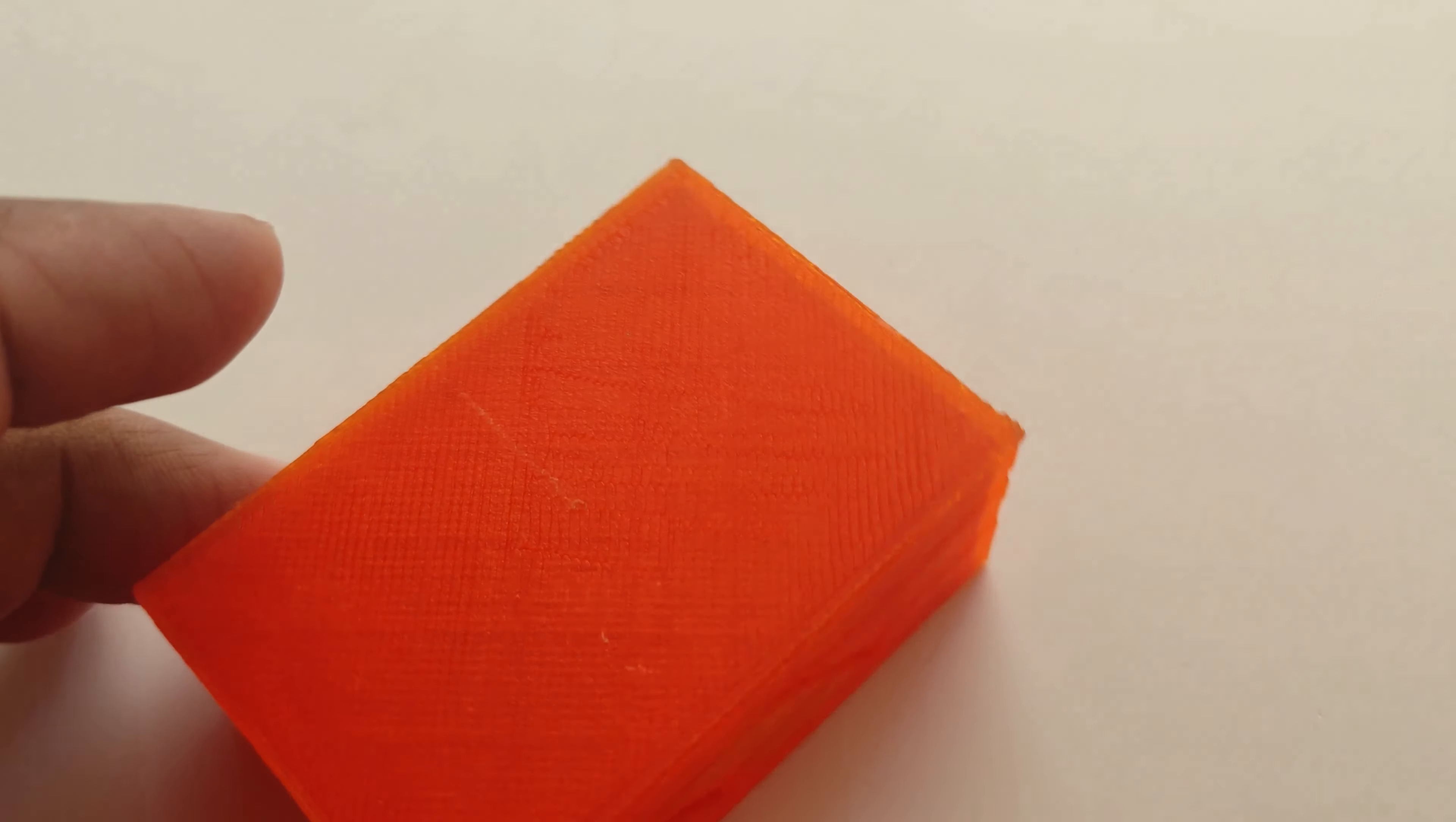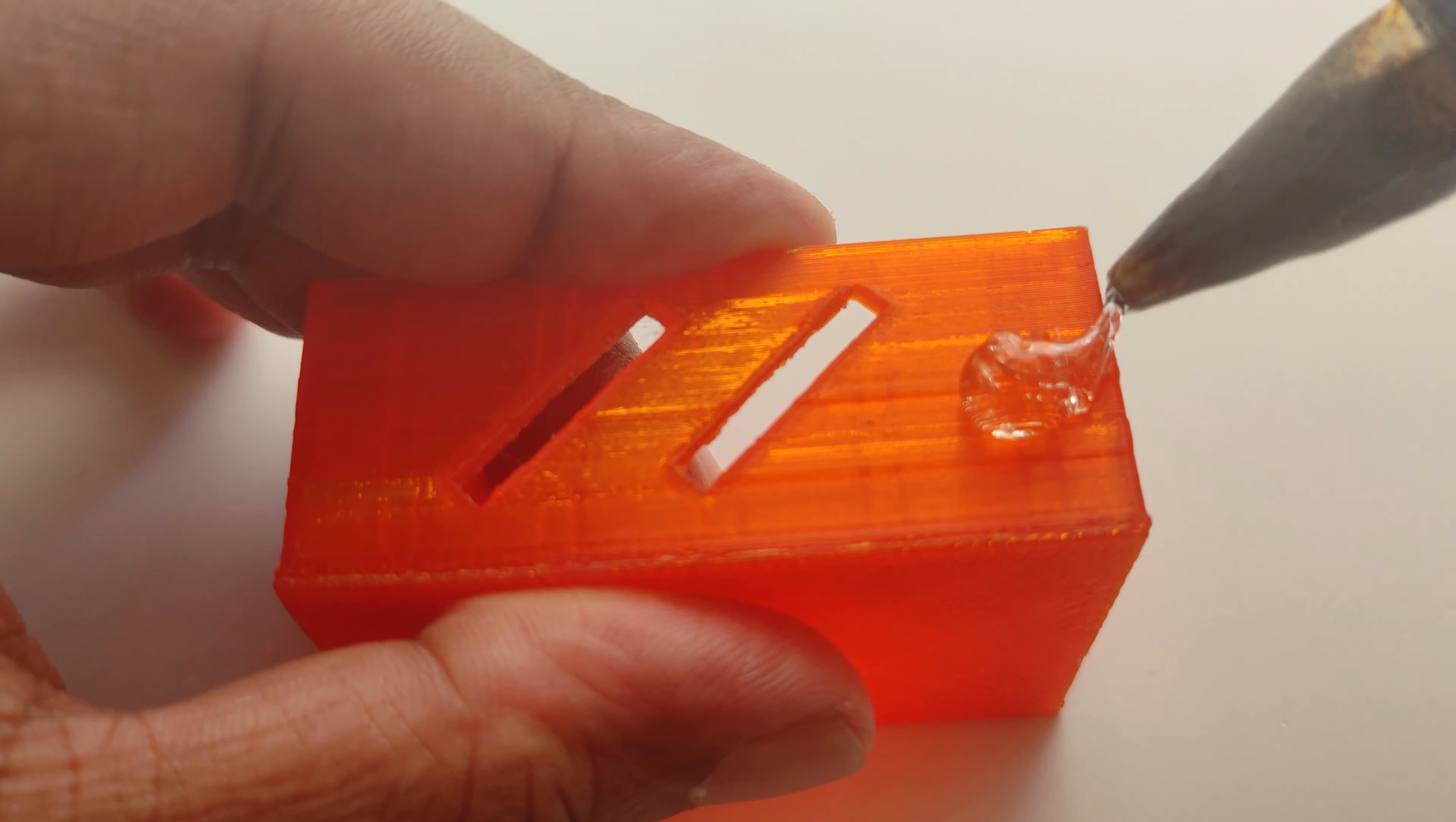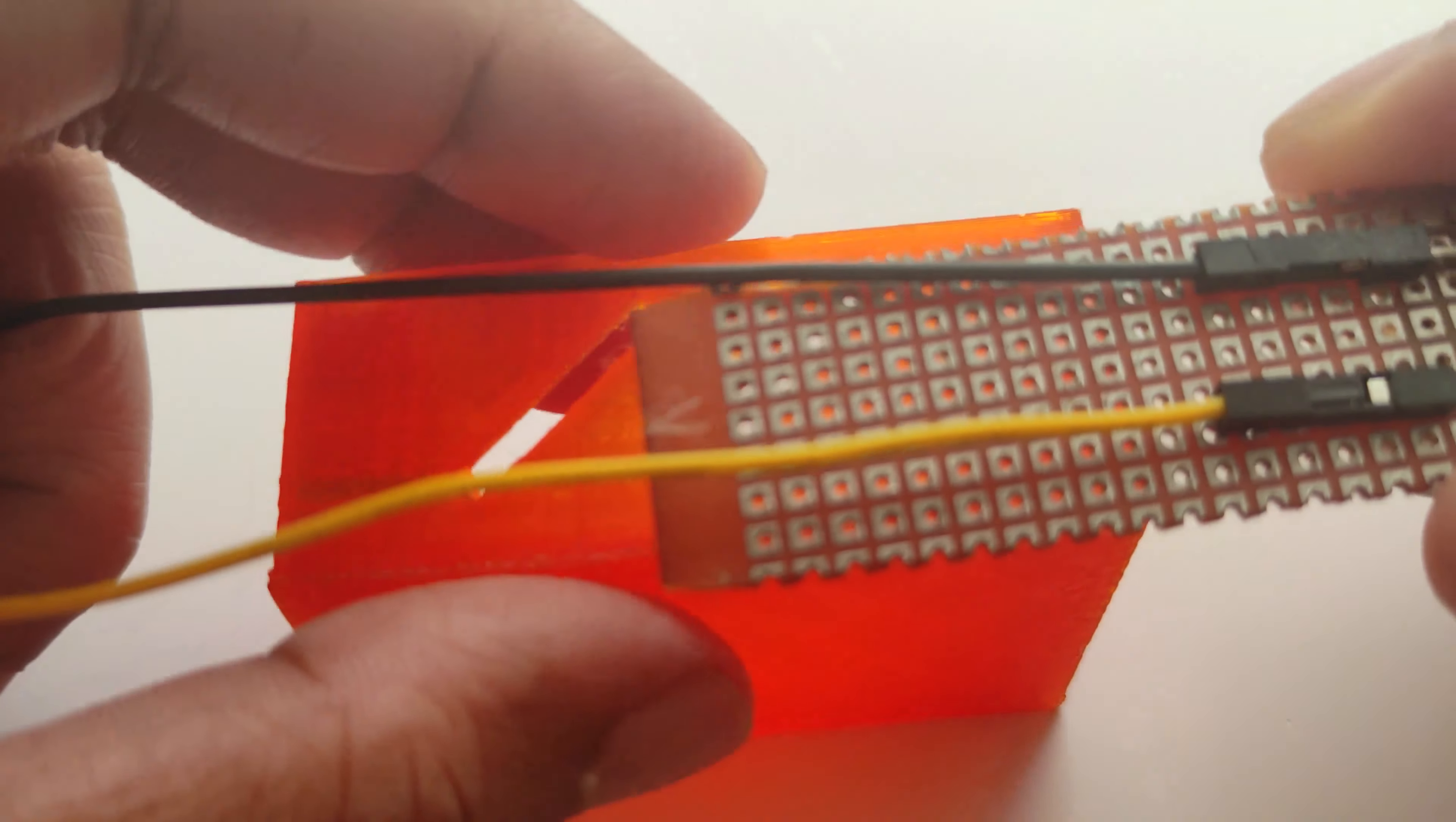Then I 3D printed a small box to fix the module. Applied a small amount of glue to the top side of the box to fix the ultrasonic module which was prepared before.